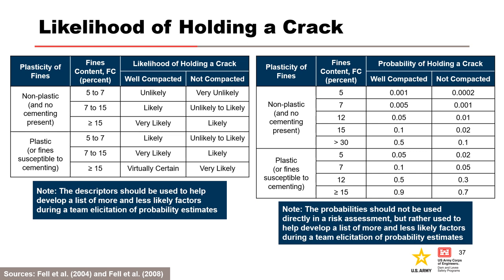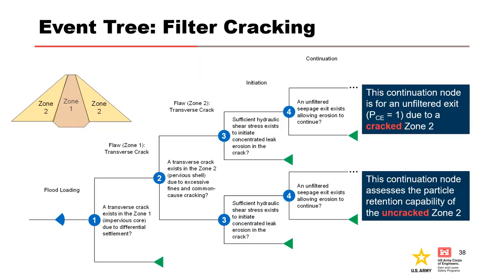This slide provides suggested guidance for assessing the likelihood of holding a crack based on fines content and cementation. The descriptors and probabilities should be used to help develop a list of more and less likely factors during a team elicitation of probability estimates. This slide also illustrates how the generic event tree can be adapted if filter cracking is a concern. A node is added to assess the likelihood of common cause cracking in the zone 2 or pervious shell due to excessive fines. If zone 2 is cracked, an unfiltered exit exists; otherwise, the continuation node assesses the particle retention capability for the uncracked zone 2.